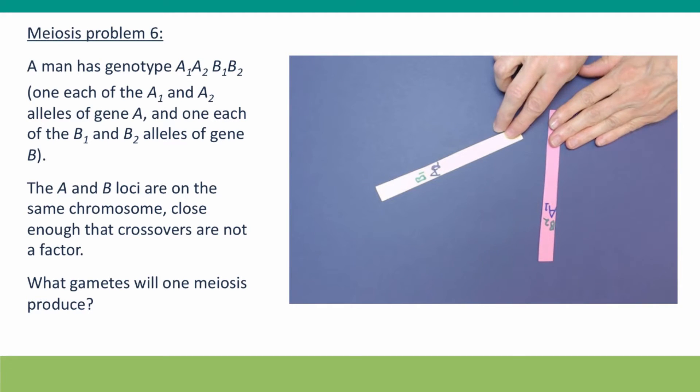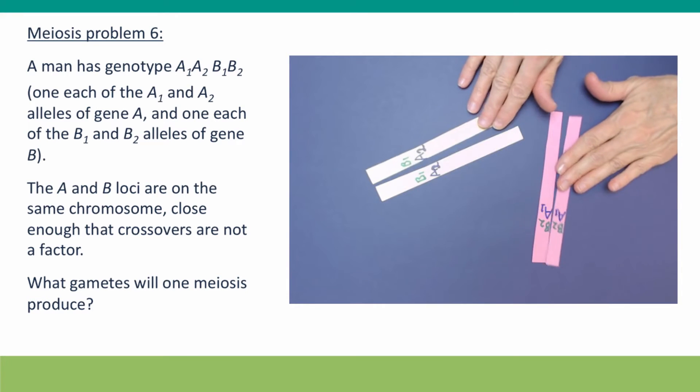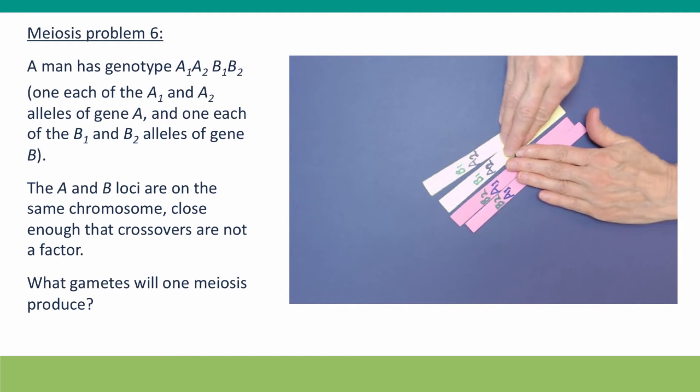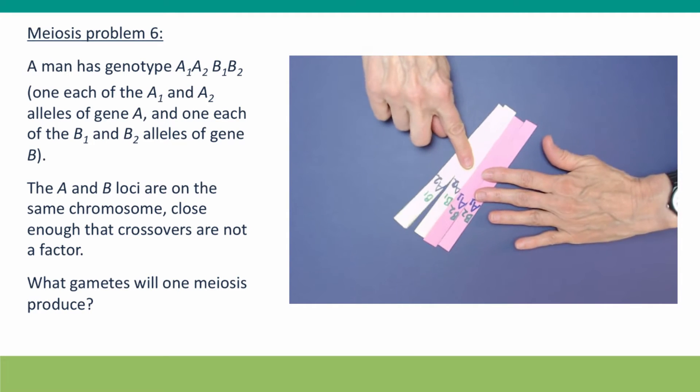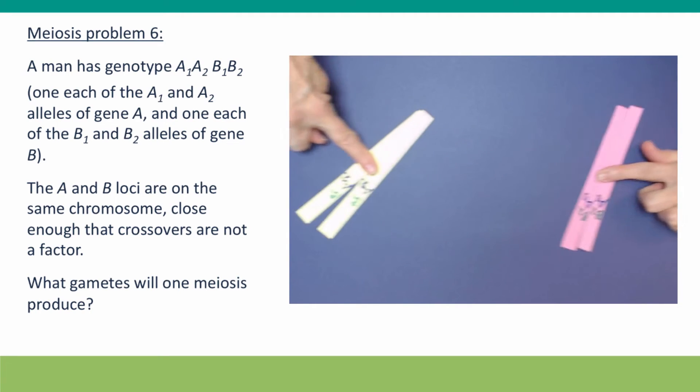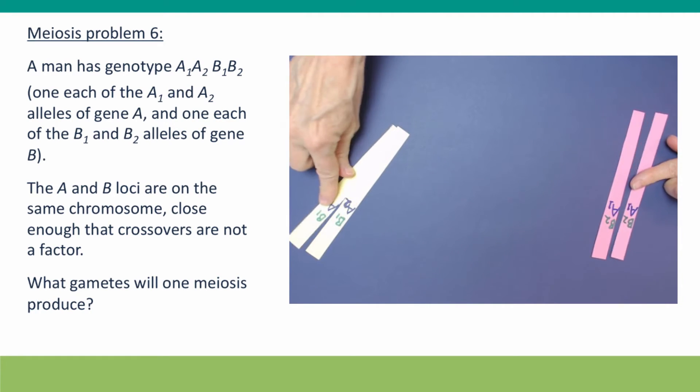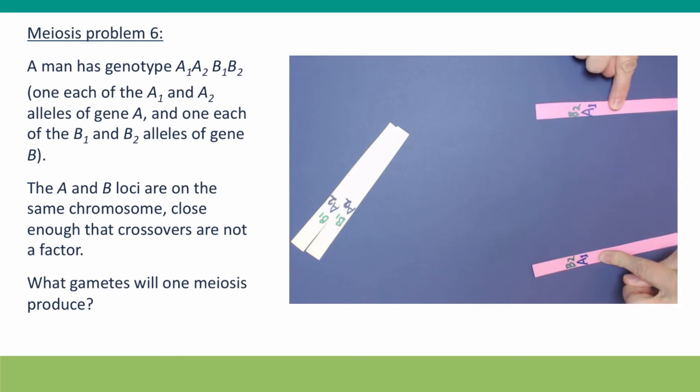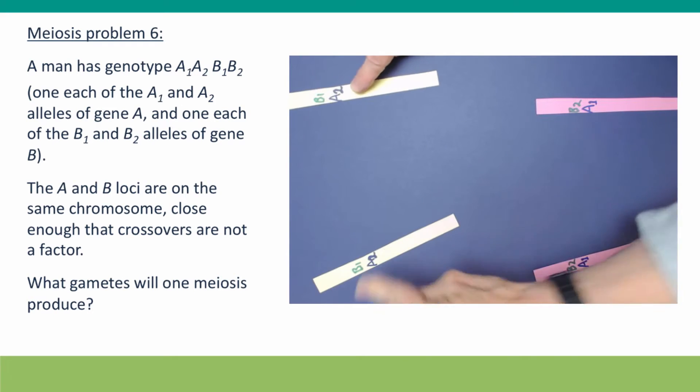So here's our chromosomes. We can make them go through meiosis. Here's your other sister. The DNA has replicated. The homologues find each other. They line up at the center of the cell. They're pulled apart to daughter products of meiosis I. The sister chromatids are attached by spindle fibers and pulled apart. Cell divides again. Then we have four products of meiosis.